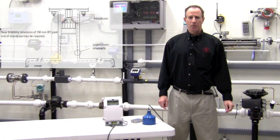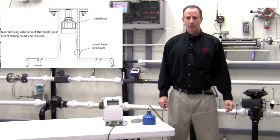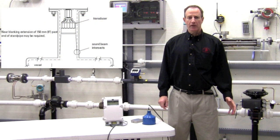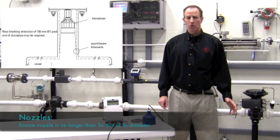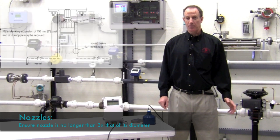Nozzles can create problems for both threaded and flange sensors. A nozzle may make the reading look higher than the actual level. Siemens suggests that any mounting nozzle length would be no longer than three times the nozzle diameter.